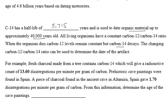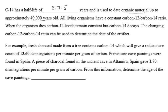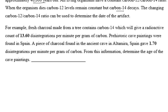Radioactive dating with carbon-14 works because carbon-14 will decay once an organism dies, and then scientists can figure out how old that organism was. For example, fresh charcoal from a tree containing carbon-14 gives a radioactive count of 13.6 disintegrations per minute. They found prehistoric cave paintings with charcoal in it, and that charcoal gave a reading of 1.7 disintegrations per minute. From this information, we can date the charcoal to determine the age of the paintings.